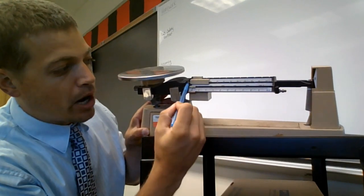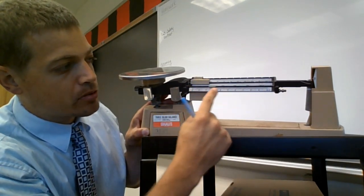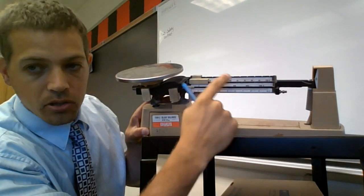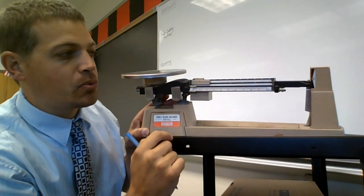And on top we all have our riders and they ride on the beams. We have one for our single grams, for our hundreds which is in the middle, 100 grams, 200 and so forth, and then our tens as well.